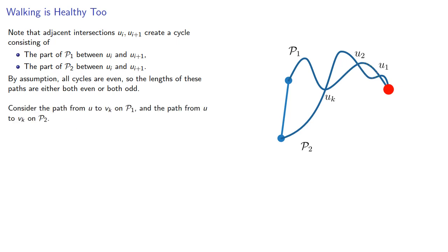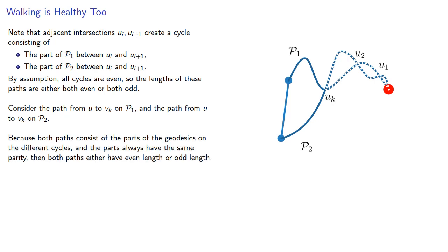So now consider the path from u to vk on our first geodesic, and the path from u to vk on our second geodesic. Because both paths consist of the parts of the geodesics on the different cycles, and the parts always have the same parity, then both paths either have even length or odd length.